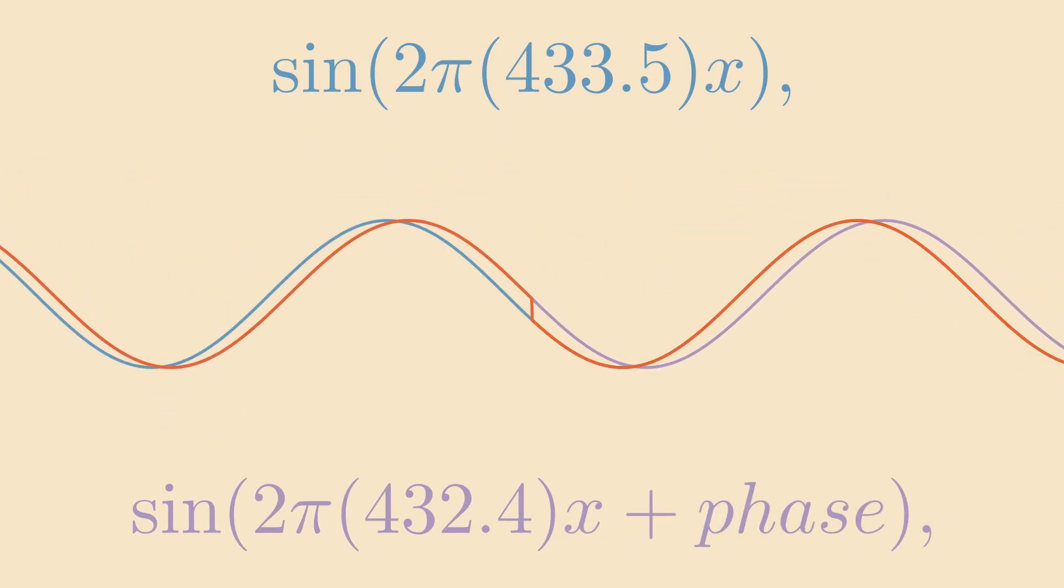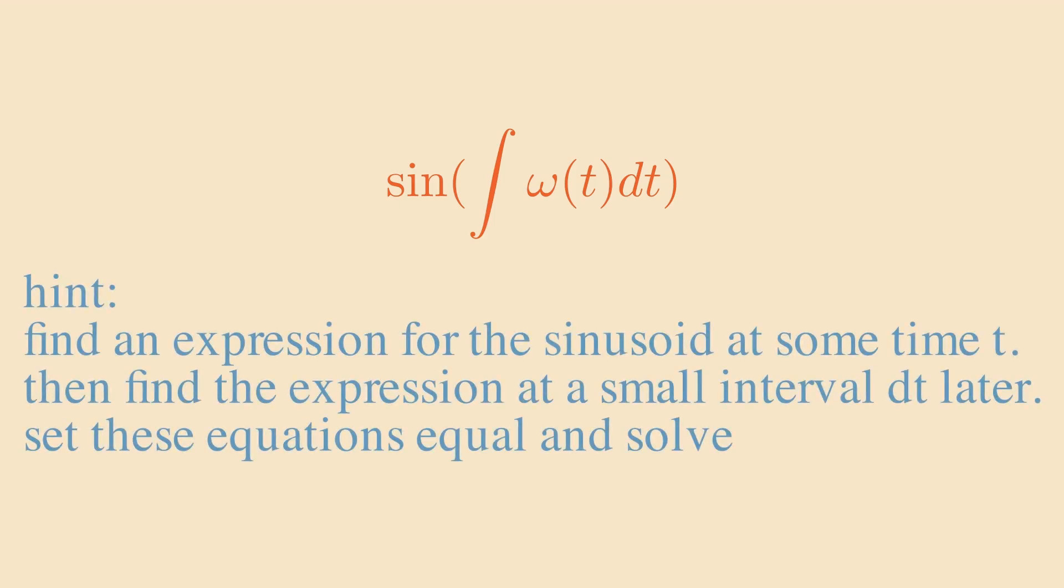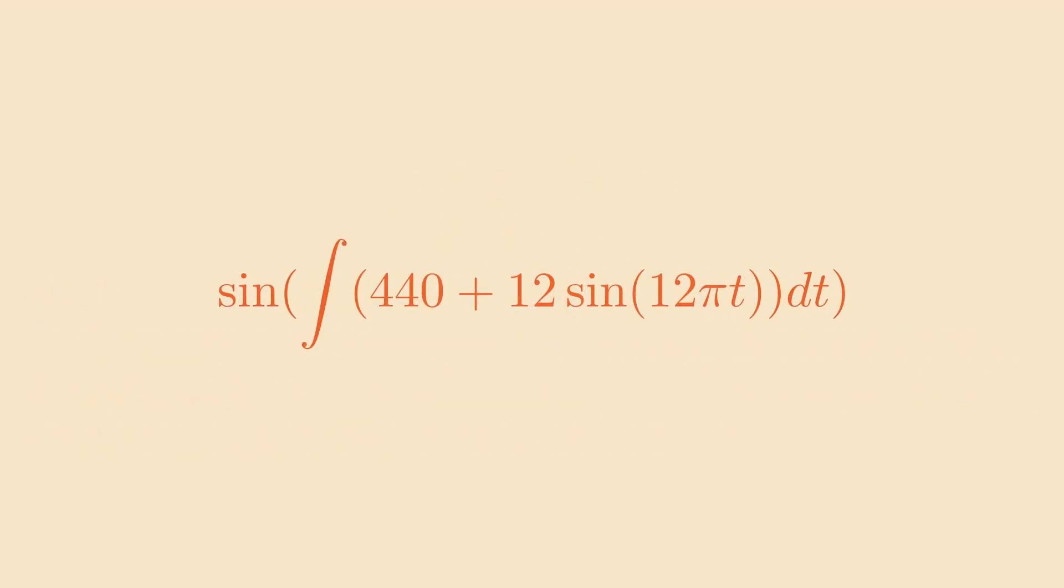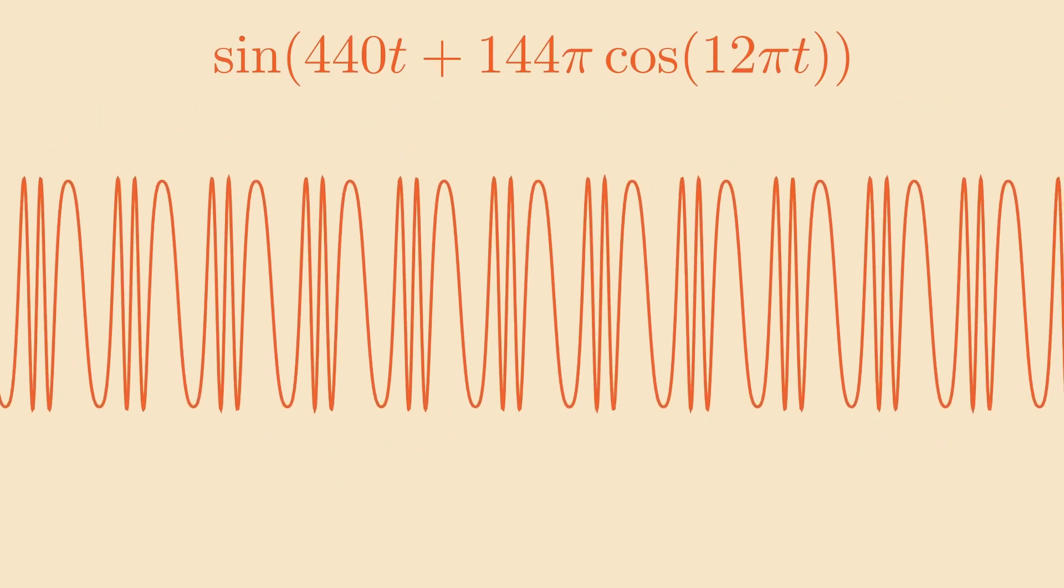Luckily, we can fix this by adding a phase ourselves such that it connects smoothly. It turns out that the expression for the sine wave with vibrato is the sine of frequency's integral. The exact derivation is left as an exercise to the viewer, but it's a really neat problem so I highly recommend trying it out. Anyhow, our sinusoid for vibrato ends up taking this form, which if we now graph and listen to, gives us what we expected.